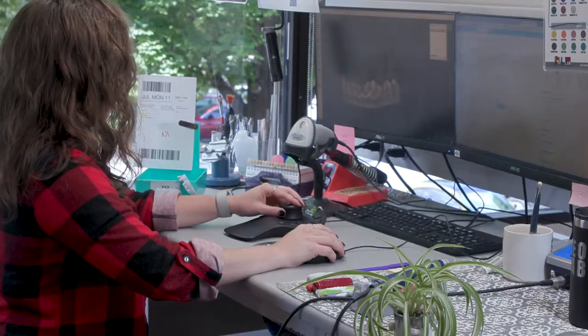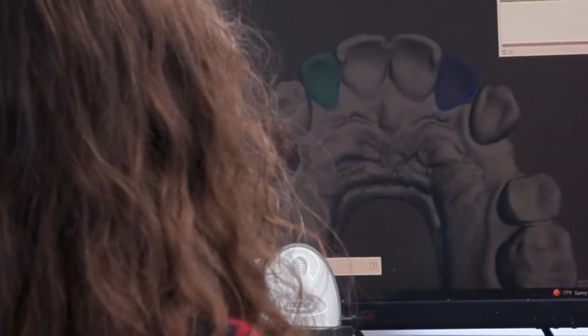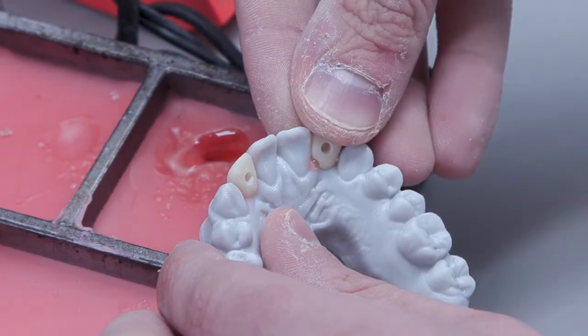After I design them, I separate it from the tooth and that's when it gets the ridge of their gum line on the bottom. So once it gets printed, it literally just clicks right into the spot.